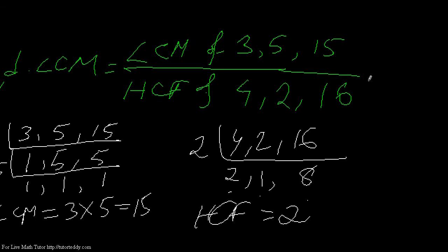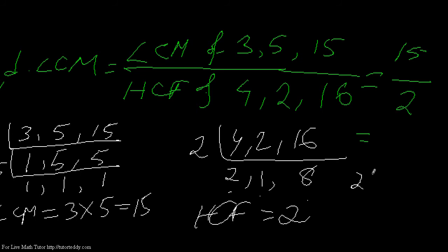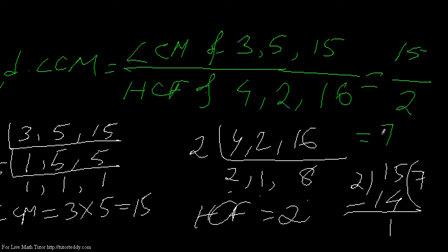So the required LCM is 15 divided by 2. Since the numerator is greater than the denominator, I can convert it to a mixed number. Let me show it here: 15 divided by 2 — 7 twos are 14, which is closest to 15; subtract and I get a remainder of 1. So the required LCM is 7 and 1/2.